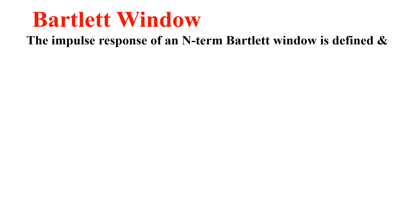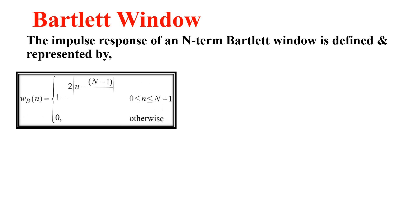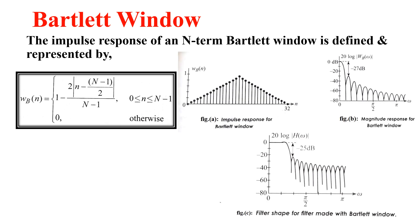Moving on to the Bartlett window. The impulse response of an N-term Bartlett window is defined and represented by this formula. We need to make use of this to find the impulse response. Again, three diagrams are shown: the impulse response, magnitude response, and filter shape for a filter made with the Bartlett window.